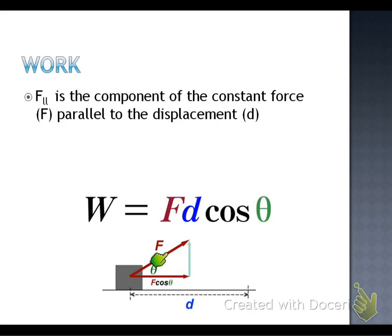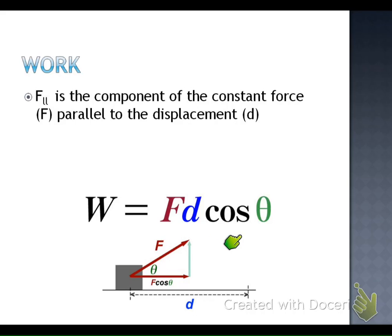Here is a box being pulled upward with some force at an angle. We can't use this force and this displacement directly because they're not running parallel to each other. We have to have the force and the displacement be parallel. So we solve for the parallel component of that force using this equation: Work equals force times displacement times cosine of theta. If our force is exerted at some angle, we plug that in as theta.